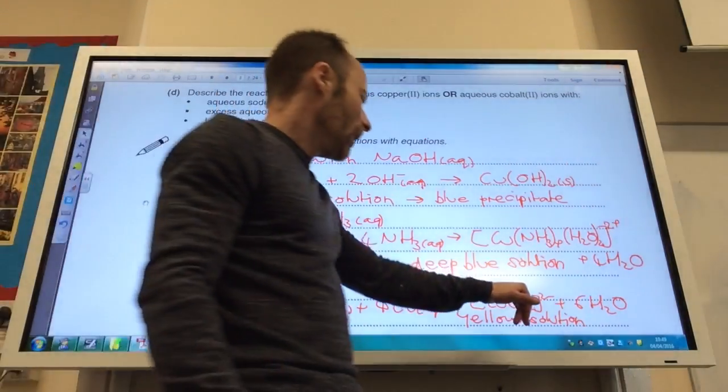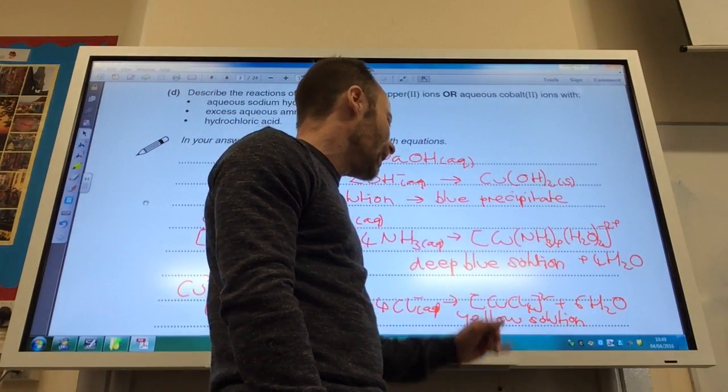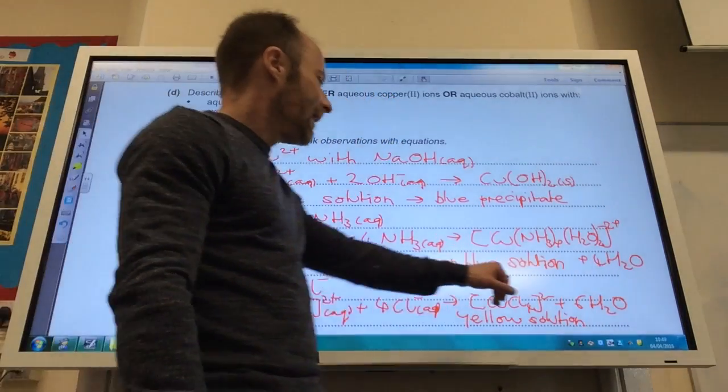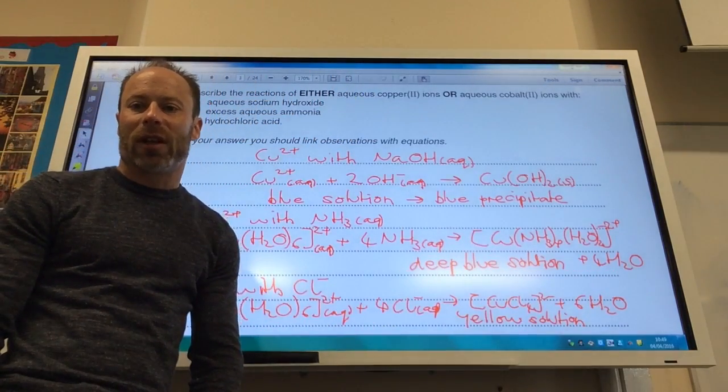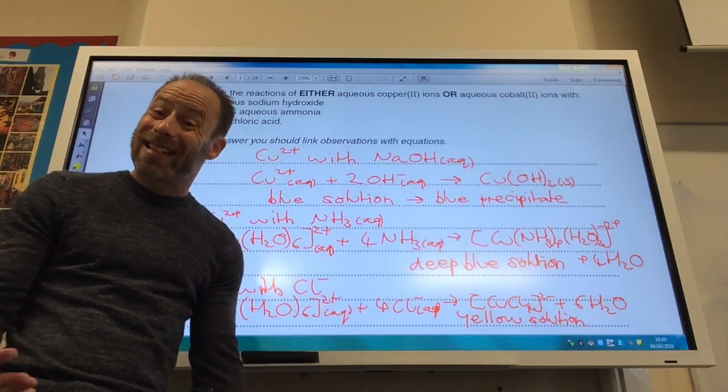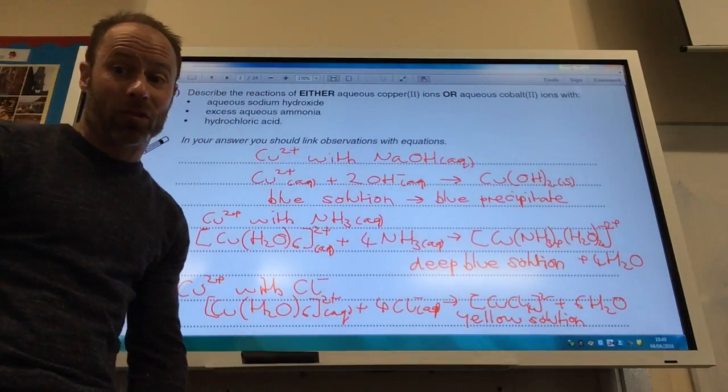you get this tetrachloride complex here. This is a 2 minus and is a yellow solution as well. So it's six easy marks if you've learned your transition metal chemistry.